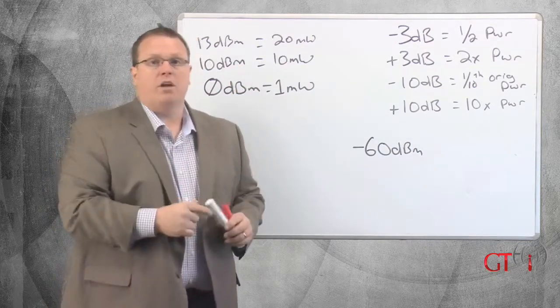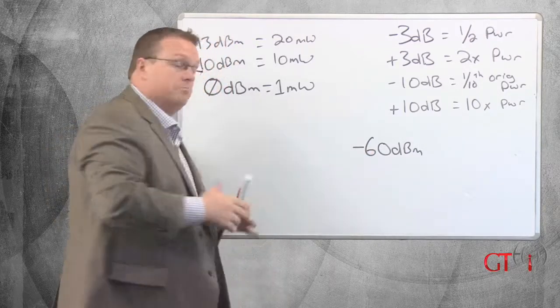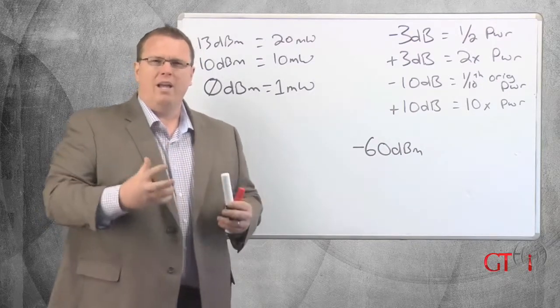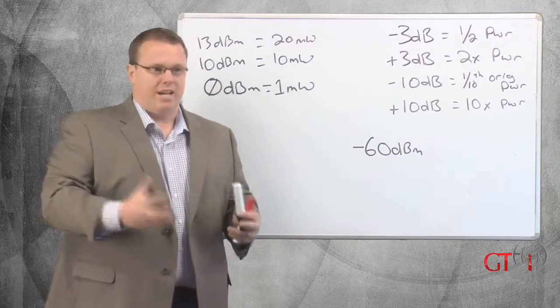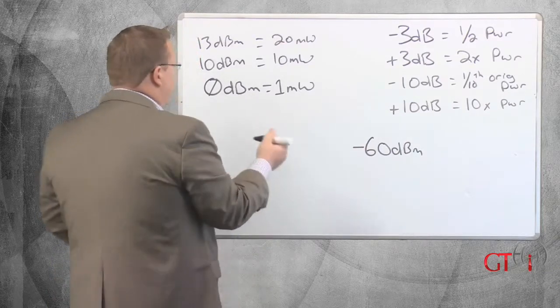But what about going the other direction? Negative 60 dBm. That's a pretty strong signal. That would be considered a great signal, actually. But why a negative? Does that mean you have negative signal? It doesn't.